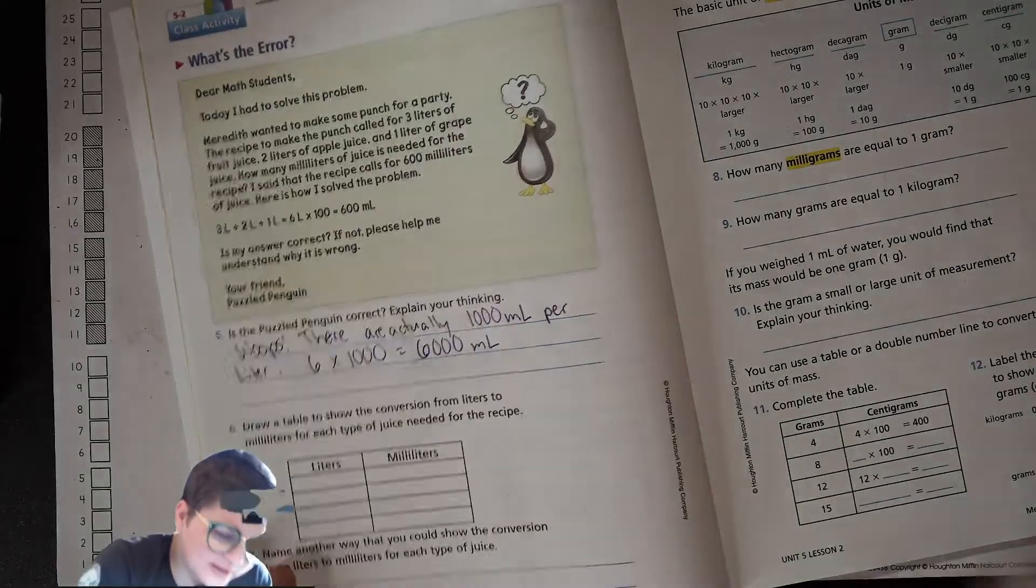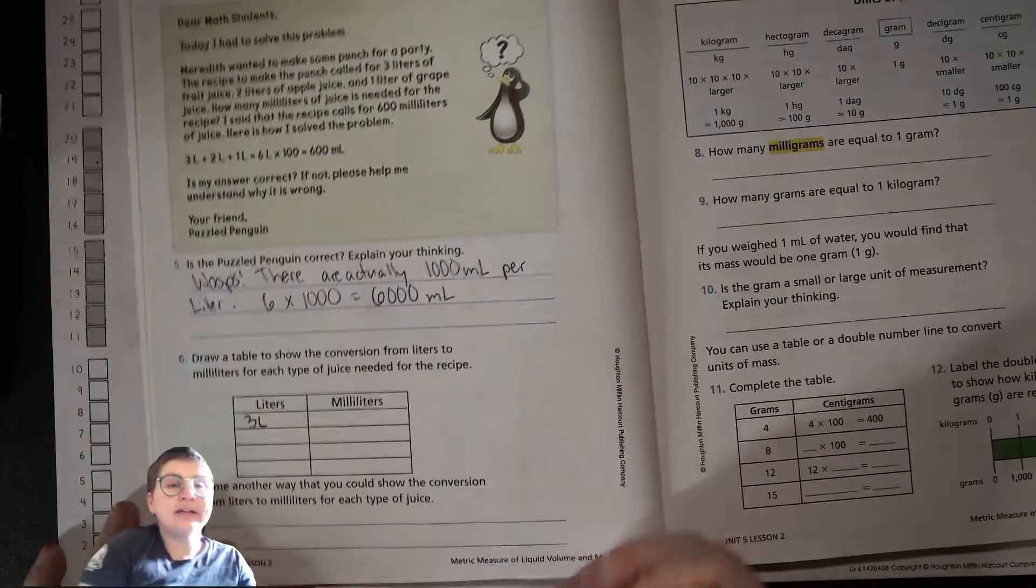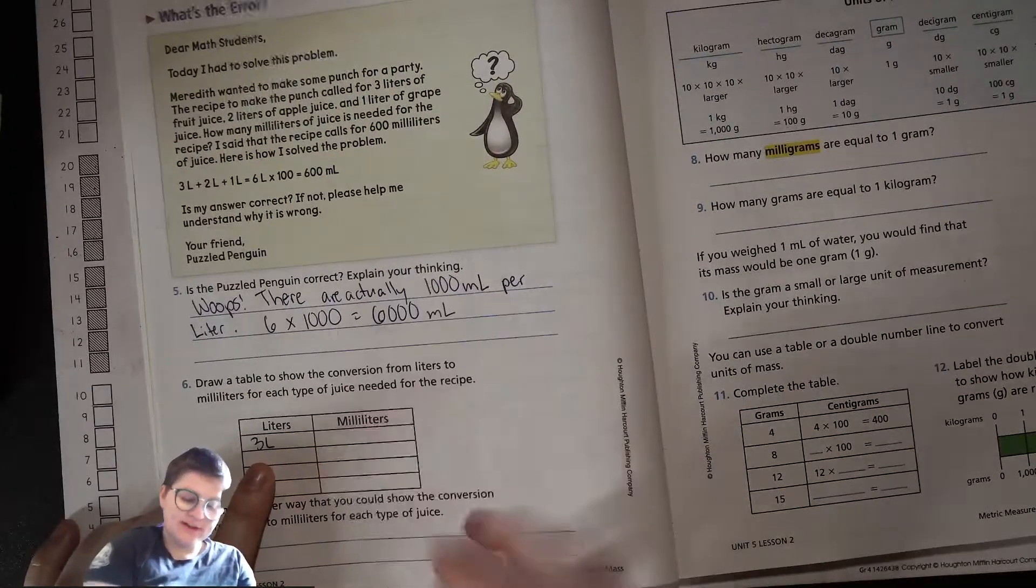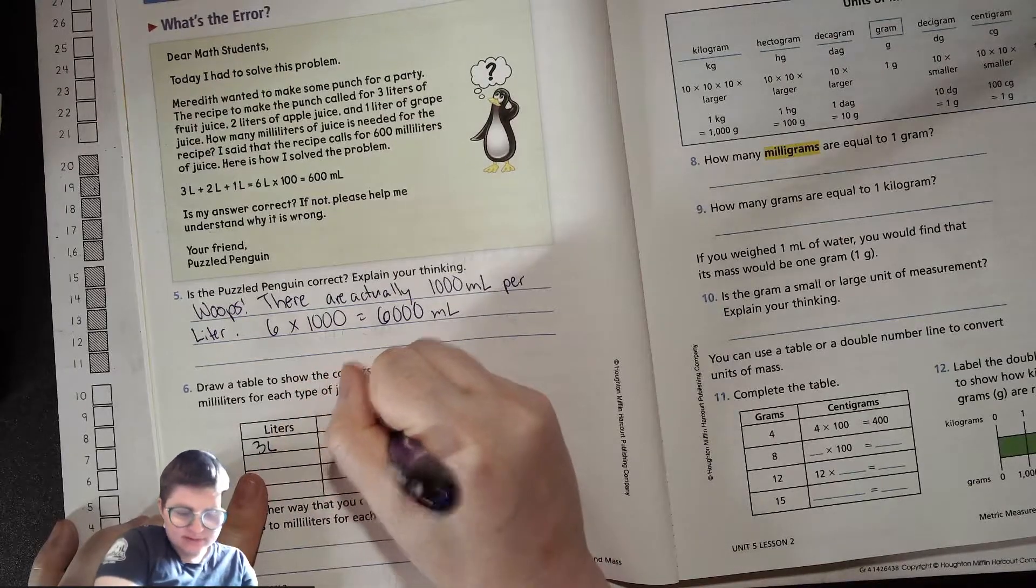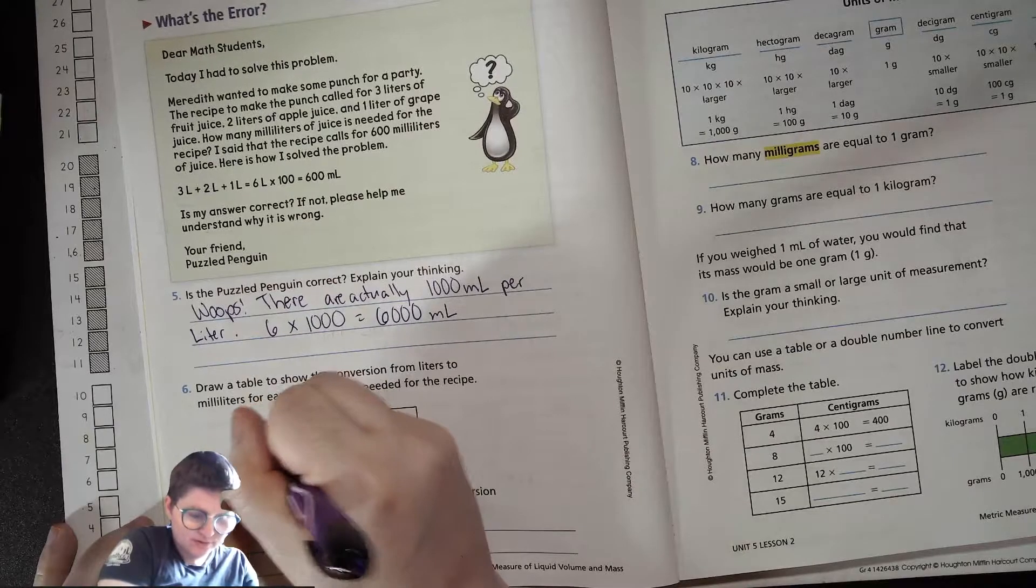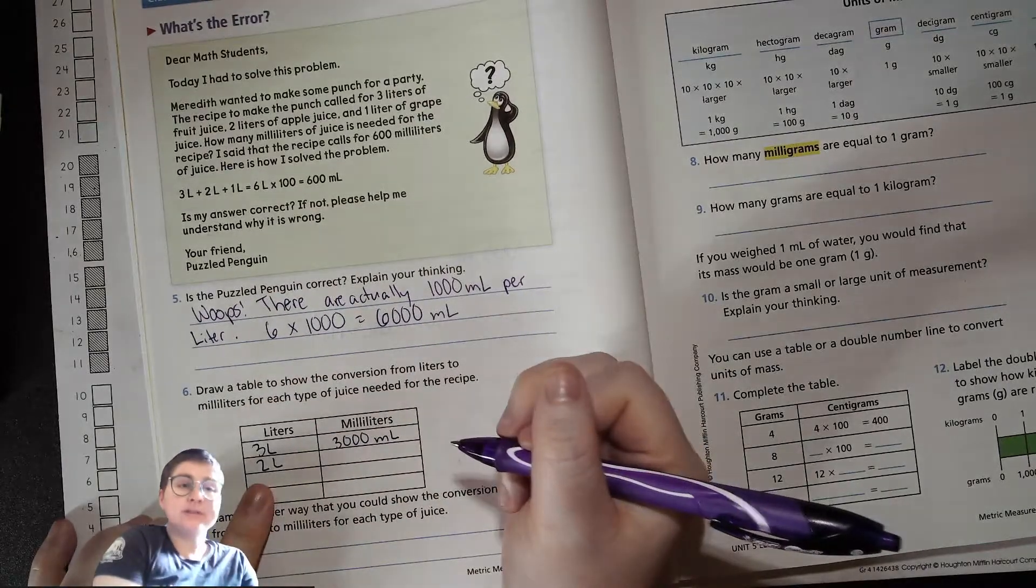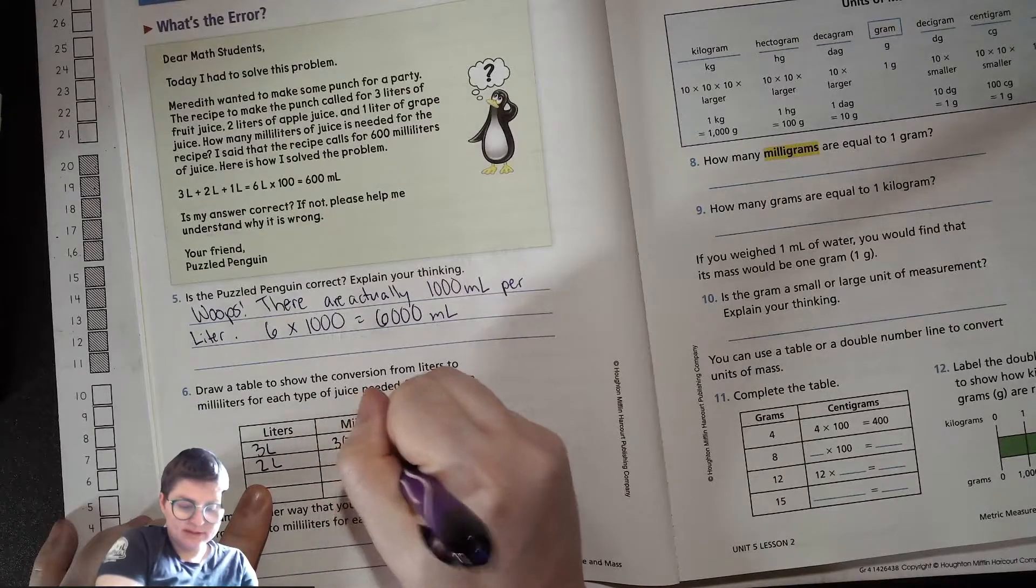So starting with the three liters of fruit juice. How many milliliters? If you multiply three by 1000, what do you get? 3000 milliliters. Okay, next one, two liters of, I think, apple juice? Two times 1000. 2000 milliliters.